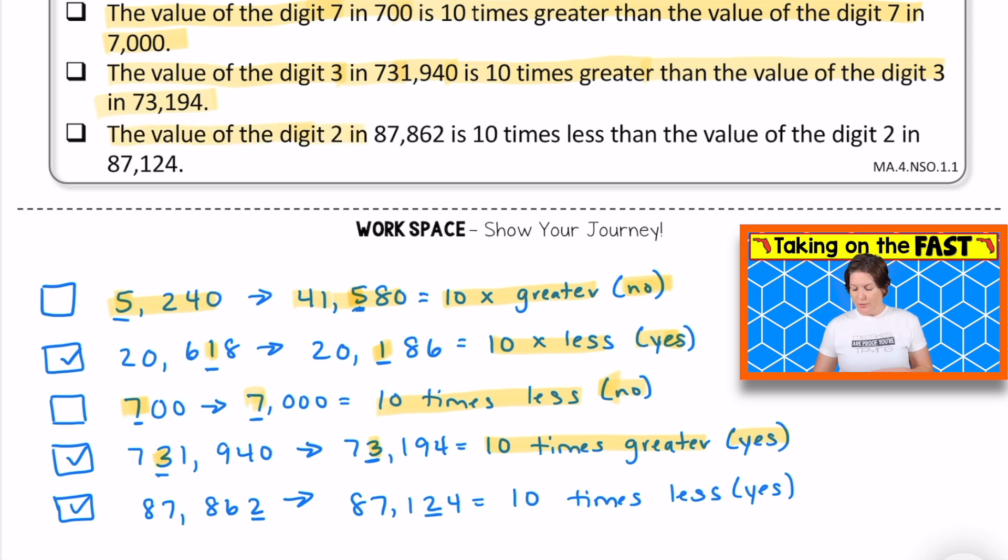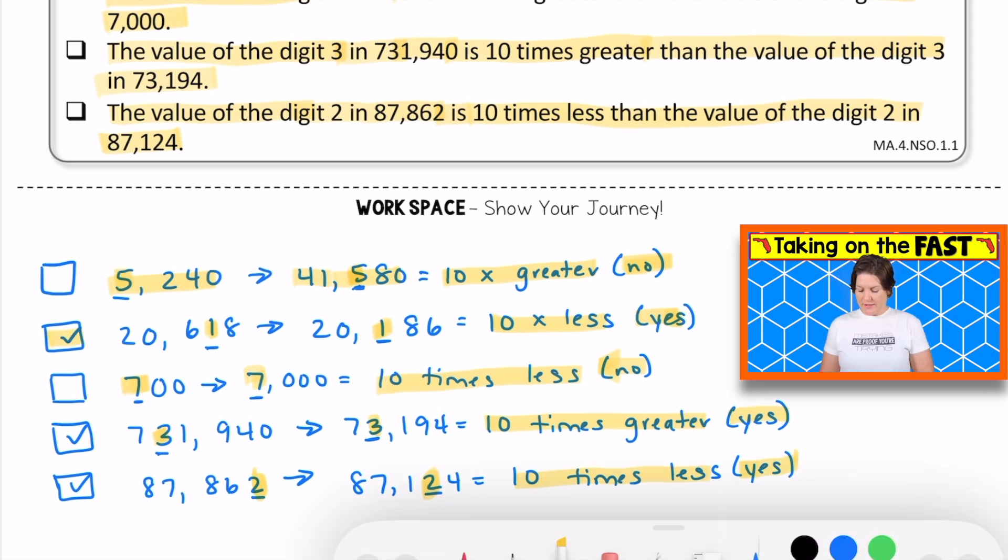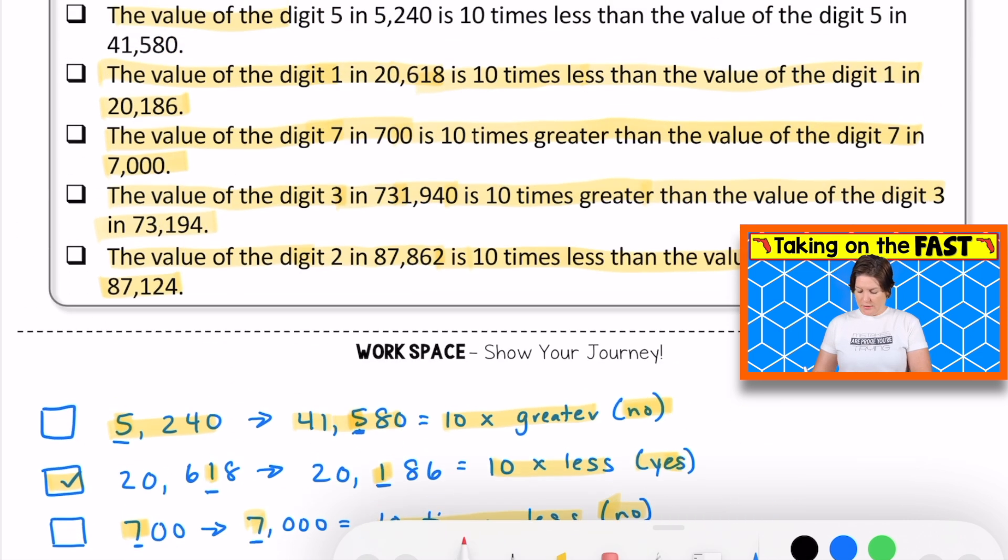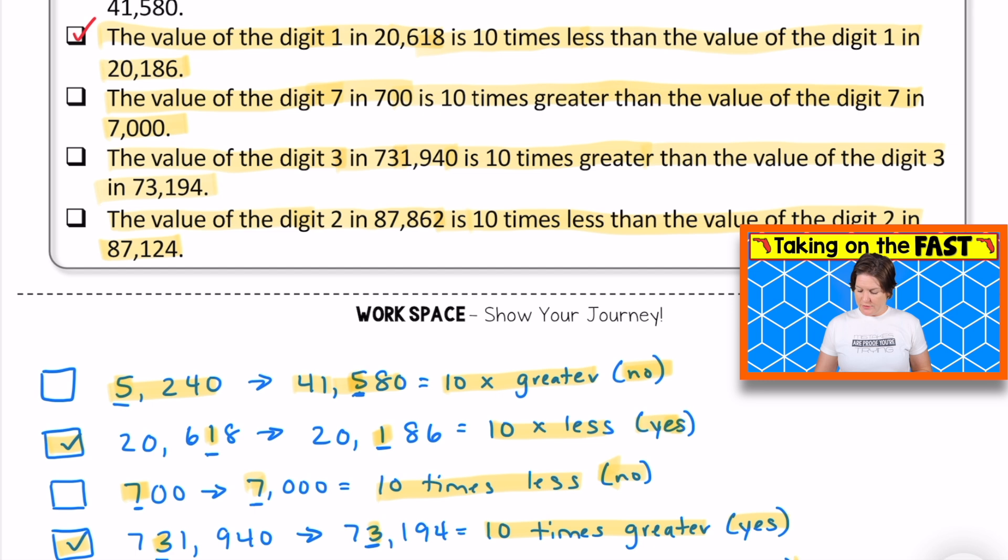Last one, the value of the digit two in 87,862 is 10 times less than the value of the digit two in 87,124. We've got the digit two here and the two here. And the first two is 10 times less. So yes, this is a correct answer too. So you can see we've got the second answer, the fourth answer and the fifth answer. So I'm going to select those, making sure I transfer my answers correctly. So we want the second one, the fourth one with 731,000, that number, that one, and then the final one with 87,862.